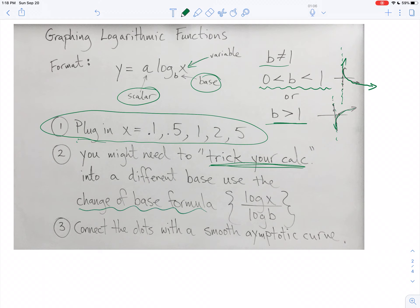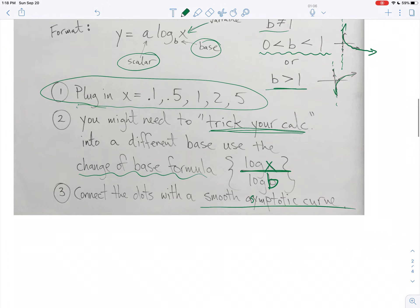So log x divided by log of whatever the base is. Log x, whatever you want to plug in, divided by the log of whatever the base happens to be. Connect the dots with a smooth asymptotic curve.